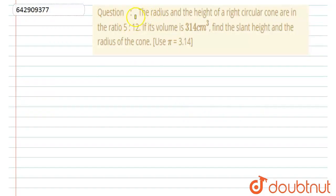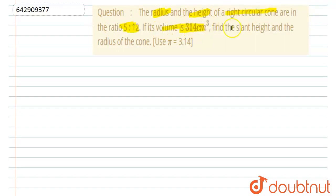Hello everyone! The question is: the radius and the height of a right circular cone are in the ratio of 5:12, and its volume is 314 cm³. Find the slant height and the radius of the cone.